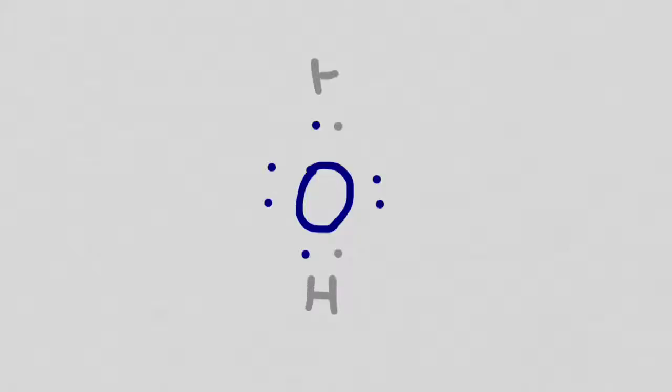Oxygen has six valence electrons, so it will form two bonds with other atoms. You wind up with two hydrogen atoms attaching to oxygen and forming a compound we're very familiar with: H2O. Both the hydrogen and the oxygen now have a complete outermost shell of electrons.